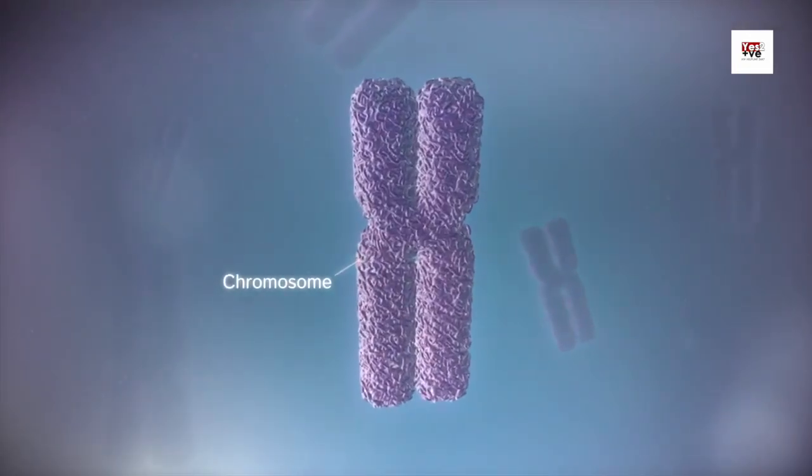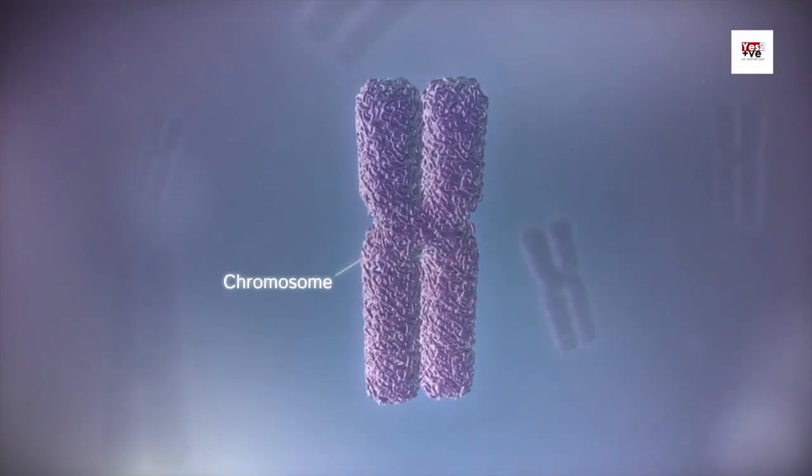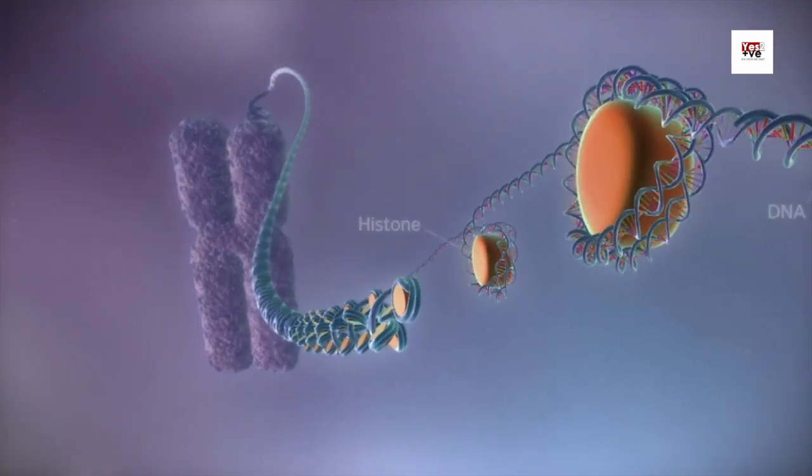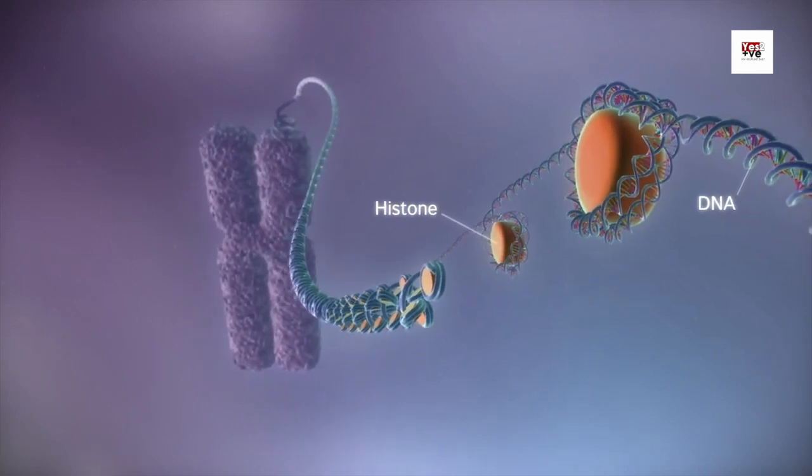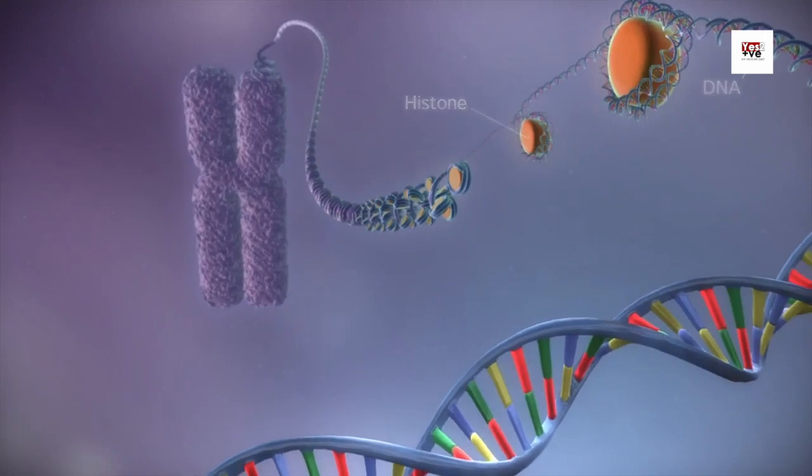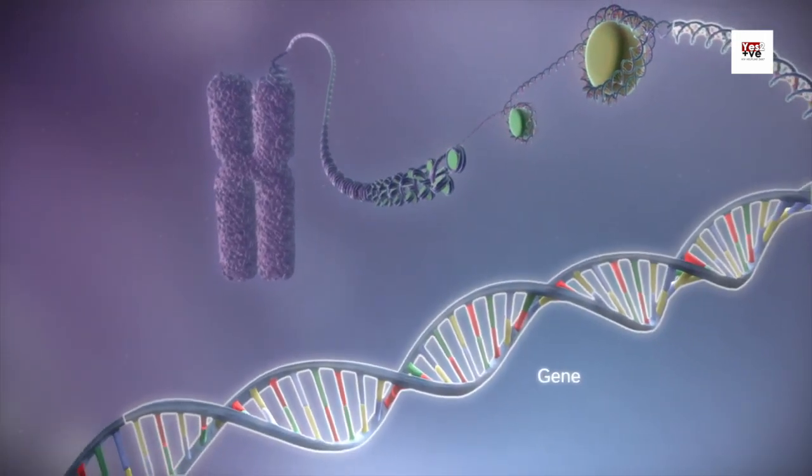First, let's start with the basics. CD4 cells, also known as CD4 plus T cells or helper T cells, are a type of white blood cell that play a pivotal role in our immune system. Their primary function is to coordinate and regulate immune responses to various infections and diseases.